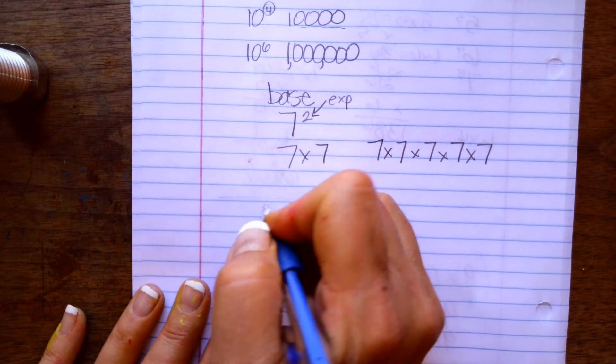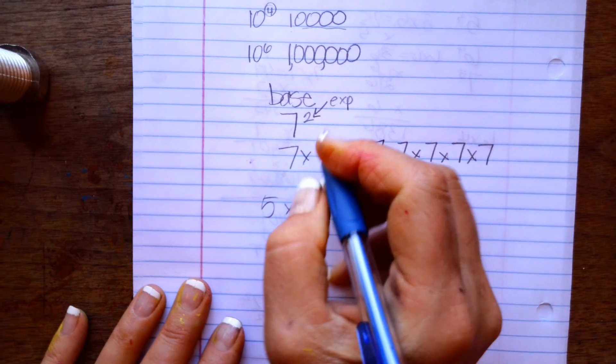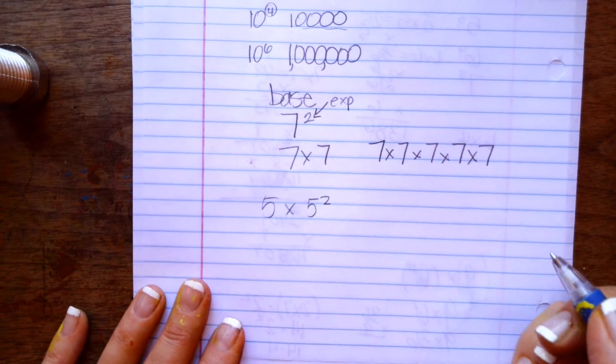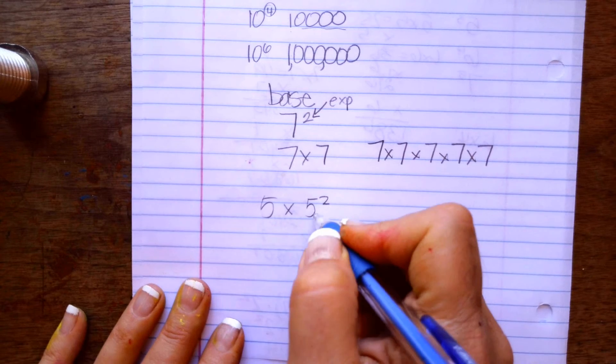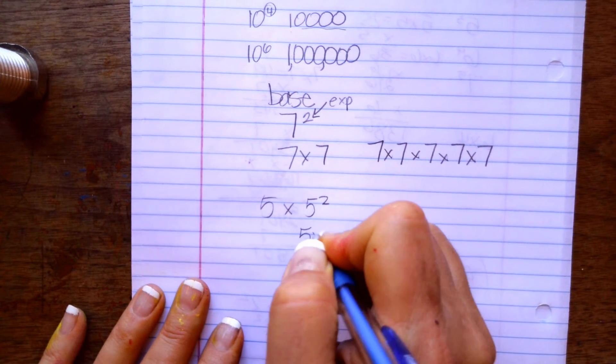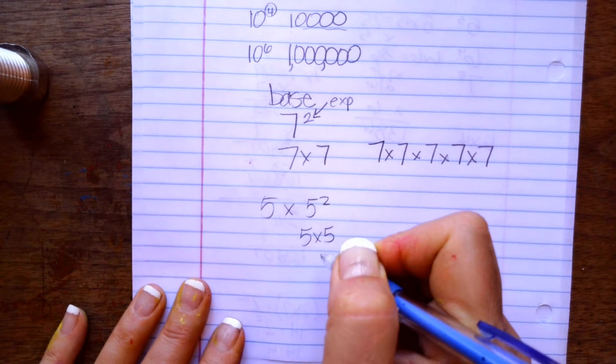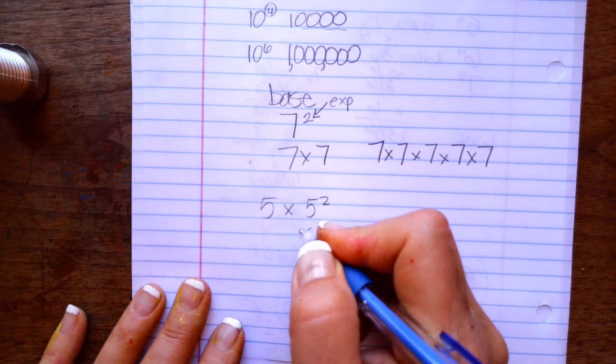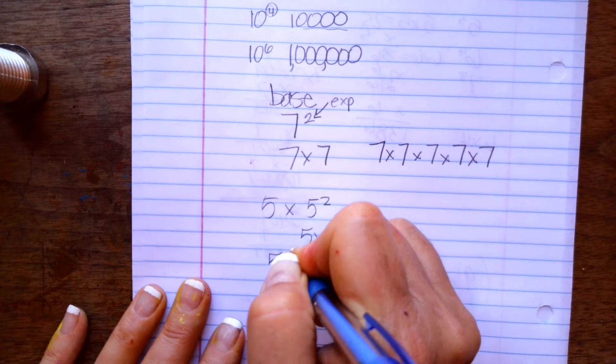Okay, the second type of problem you're going to have is when they do something that looks like this. This means you're going to do the exponent, which is 5 times 5, and that is 25. So you're going to multiply 5 times 25.